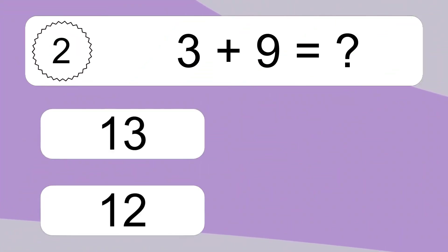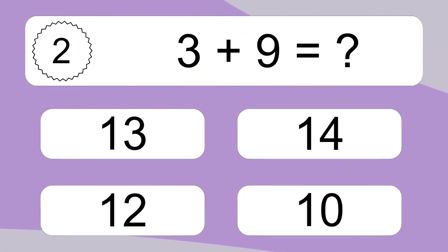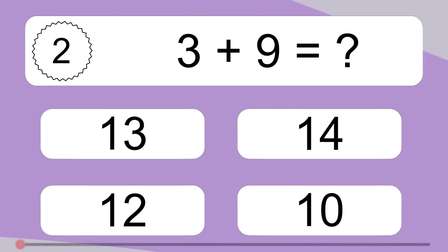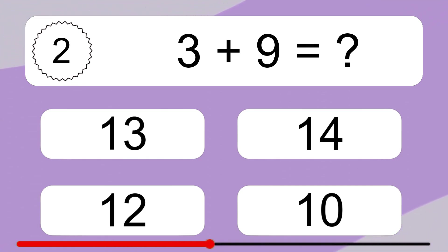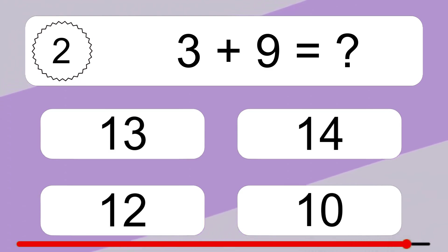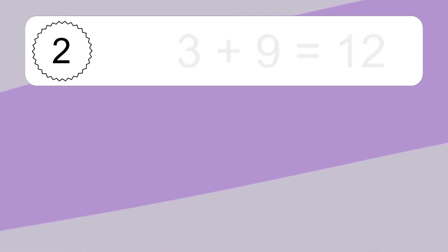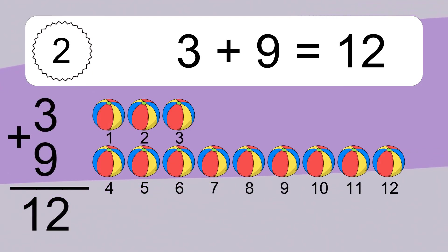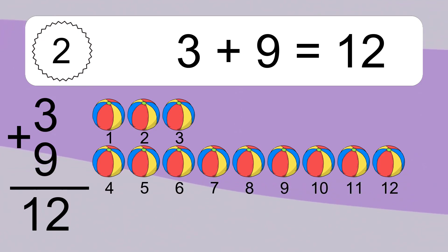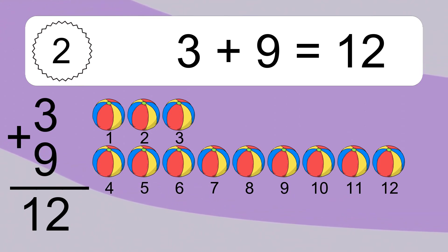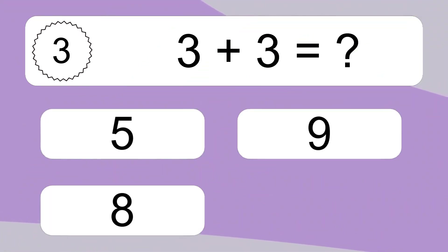3 plus 9 equals what? 3 plus 9 equals 12. Let's count it: 1, 2, 3, 4, 5, 6, 7, 8, 9, 10, 11, 12.